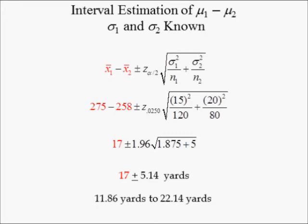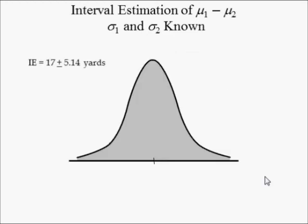Hence, at best the PAR golf ball flies 22.14 yards further than the RAP golf ball; at worst, it flies 11.86 yards further. The distribution of x-bar 1 minus x-bar 2 is normal since x-bar 1 and x-bar 2 are both normally distributed. x-bar 1 is normally distributed because its sample size is at least 50 and its population standard deviation is known; the same is true for x-bar 2.